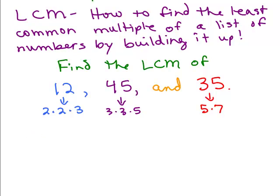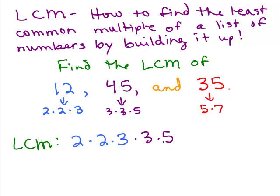Now I'm going to write the least common multiple of these numbers by building it up. To have the factors of 12 in it, I need all the prime numbers in 12. So I need a 2, 2, and a 3. I'll start off with 2, 2, and 3 — now I have a multiple of 12. I also need a multiple of 45, so I need two factors of 3 and a 5. I already have one 3, so I need another 3 and a 5. I have now built up the least common multiple to include a multiple of 12 and 45.